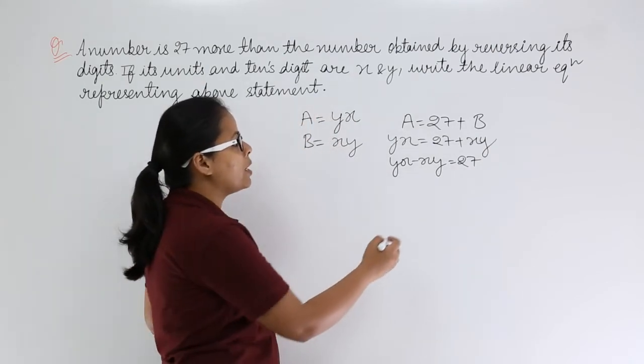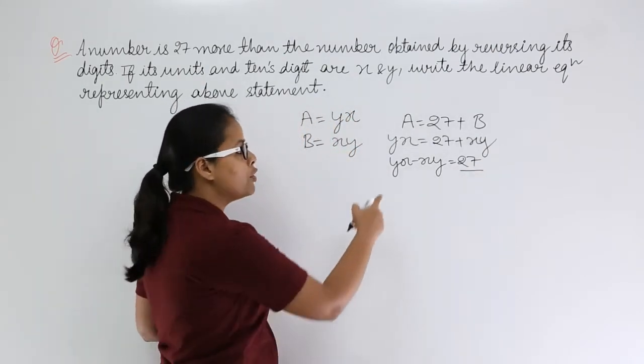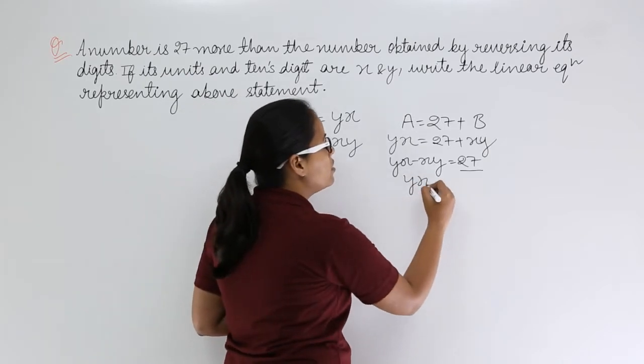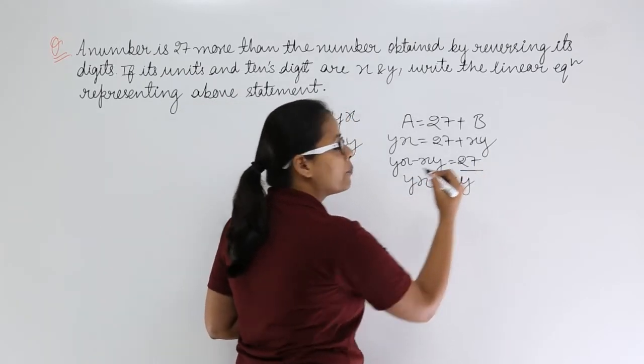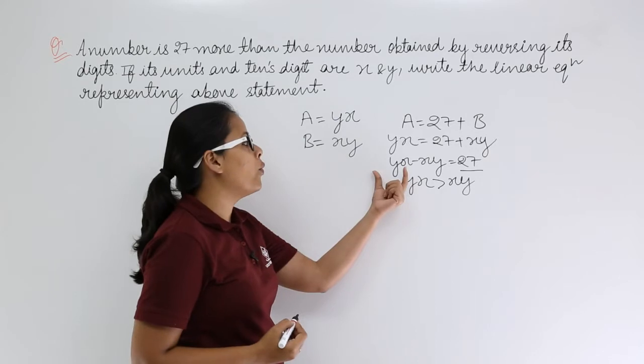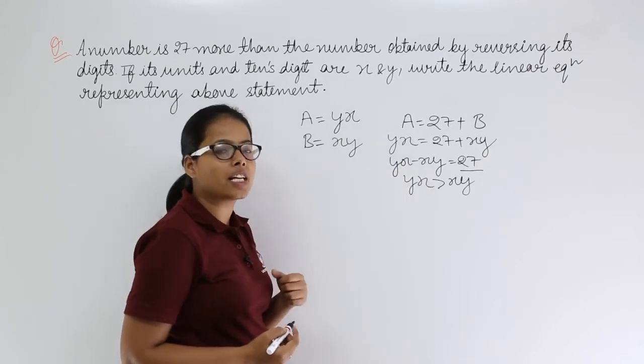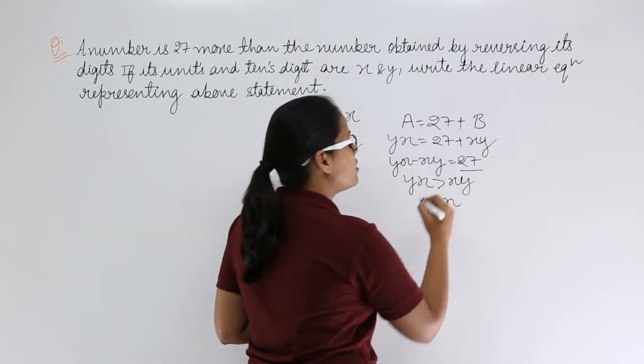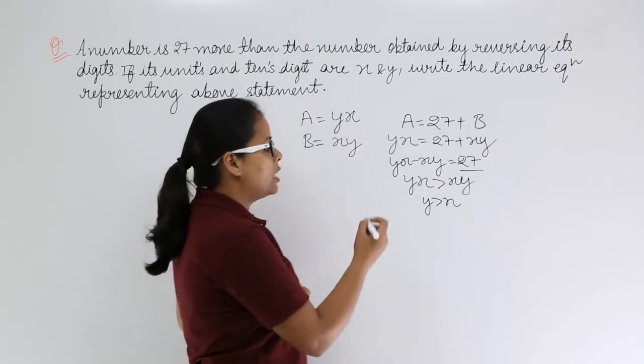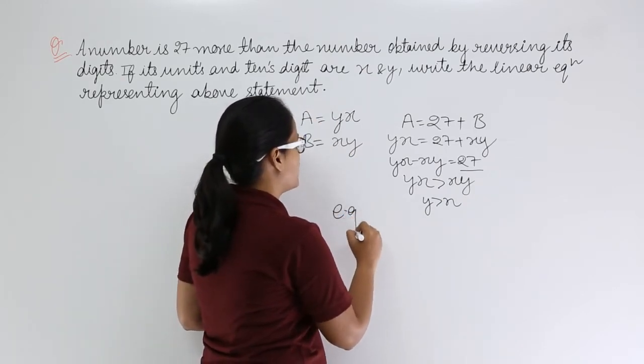So difference of this giving you 27. Now for to get positive difference, which means yx should be greater than xy, and now if yx needs to be greater than xy, which means y needs to be greater than x.